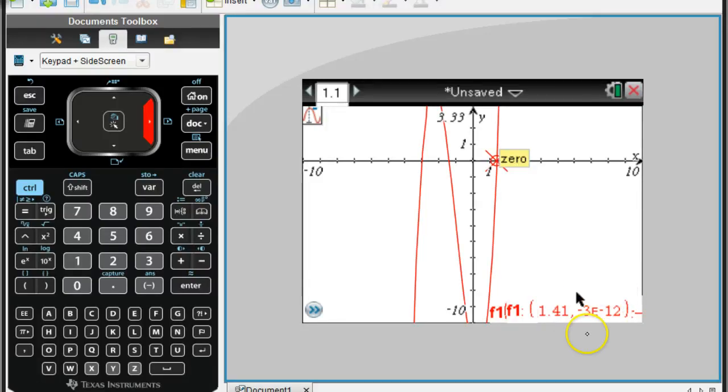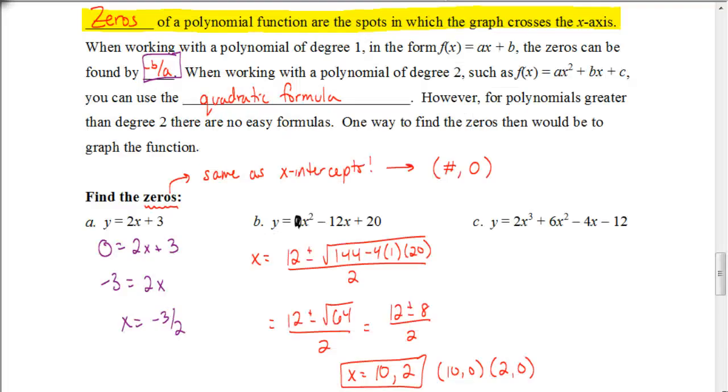And I get to that third zero, which would be at a positive 1.41. Now if you notice, this doesn't say zero here. I don't know why. Sometimes a calculator will do that. This is just saying this is -3 times 10 to the -12th power, which is pretty much zero. So to go back to our notes, we can write down those three zeros. We'll just write them down as coordinates this time. Again, as (-1.41, 0). We have the coordinate (-3, 0) and the coordinate (1.41, 0). So that's it.